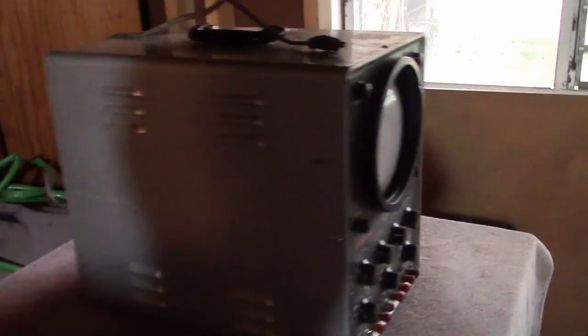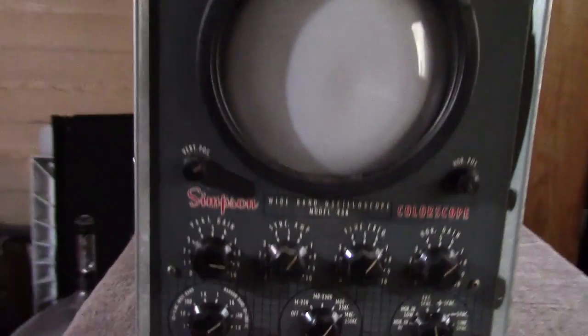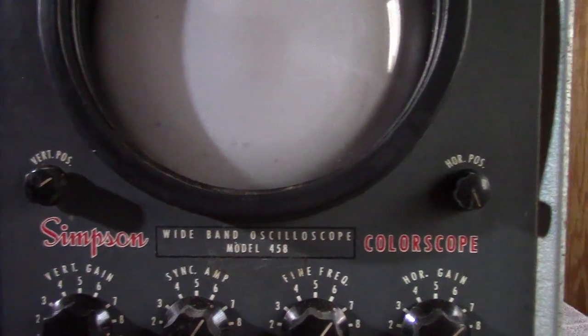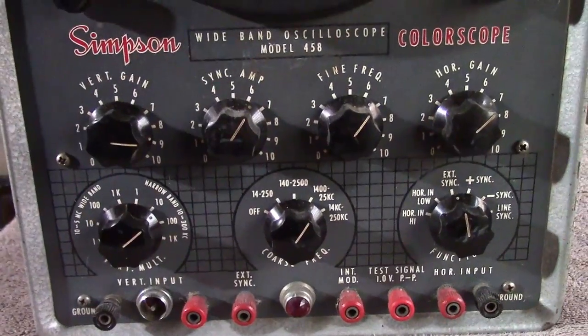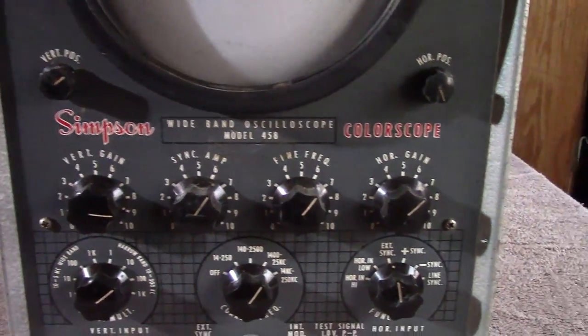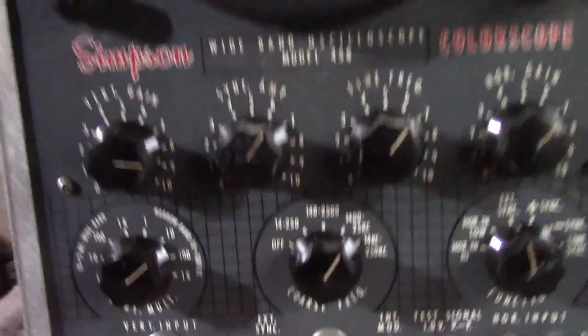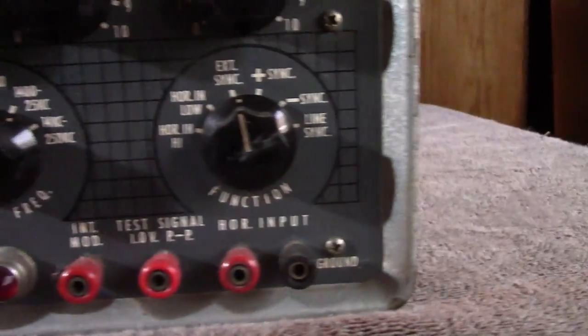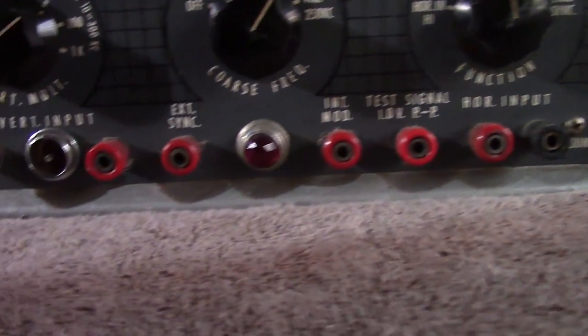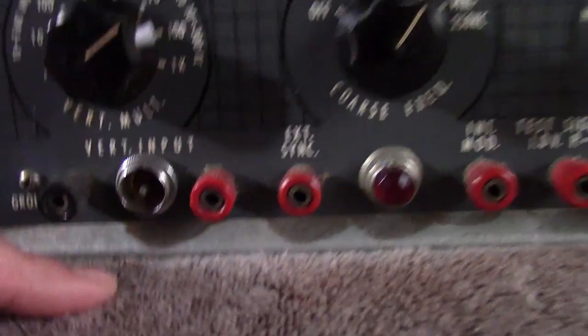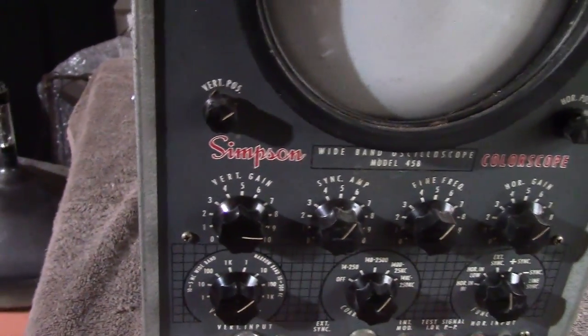First up we have a Simpson wideband oscilloscope model 458 color scope. This was advertised as being designed to work with black and white and color TVs, so it has some particular features that they thought would be handy for color TV work. It has an oddball input. Unfortunately, none of this stuff came with probes, which is so often the case with this vintage equipment.